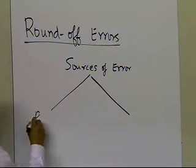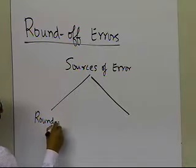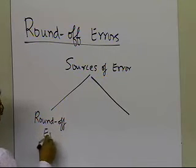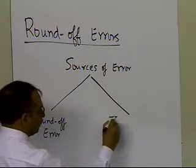So you're going to have two sources of error: one is round-off error, and the other is truncation error.